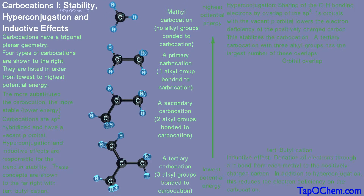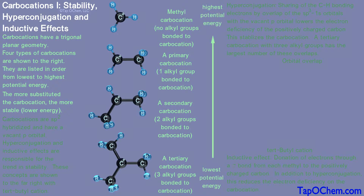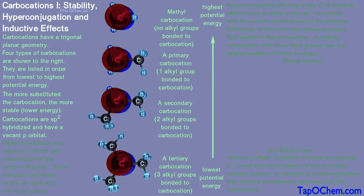The more substituted the carbocation, the lower the energy, so these carbocations are ordered in terms of increasing potential energy from bottom to top. Since they all have a trigonal planar geometry, they are sp2 hybridized, and each has a vacant p orbital.